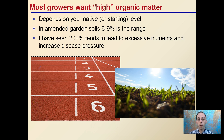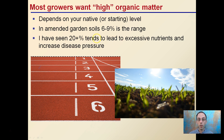Most growers will want high organic matter, and it really depends on what your native or starting level is. In many garden soils, 6 to 9 percent is a typical range, but I've seen 20 percent or greater. This tends to lead to excessive nutrients, increased disease pressure, and high water holding capacity, which can cause issues. So more is not always better for organic matter. If you're at the 6 to 9 percent range and you've modified that, that's probably plenty good right there.